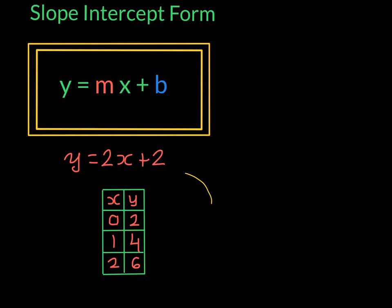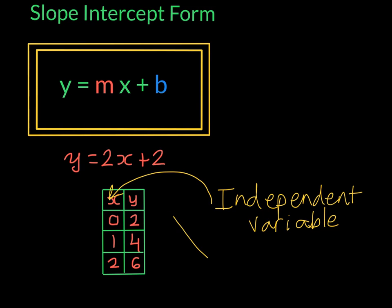This exercise using the input-output chart shows us why the x is called the independent variable, because its values are independent of anything that we do. Yet, the y-values are called the dependent variable because they depend on the x-values that we choose.